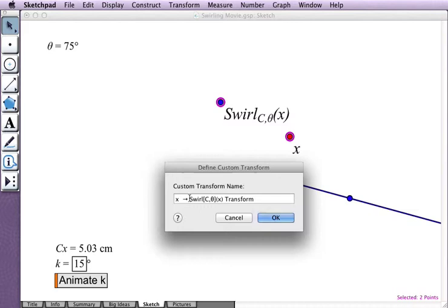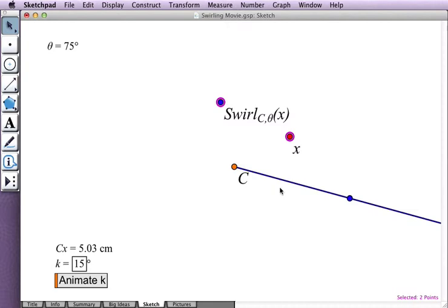I name this function swirl about C by theta, and now that I've defined swirl as a sketchpad function, I can apply that function to other sketchpad objects, such as this ray.